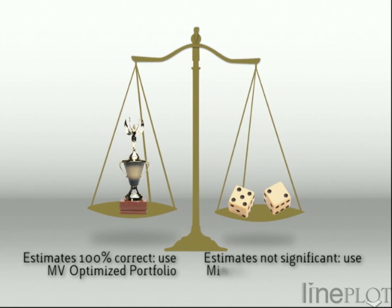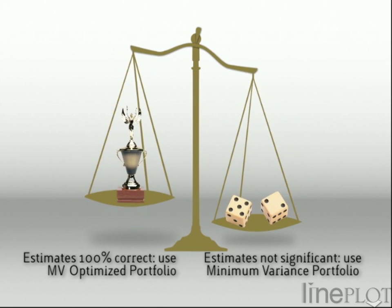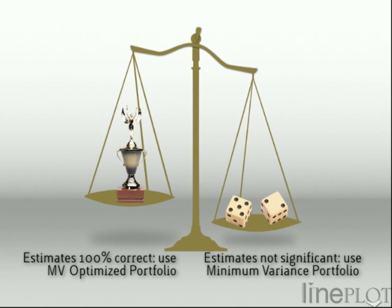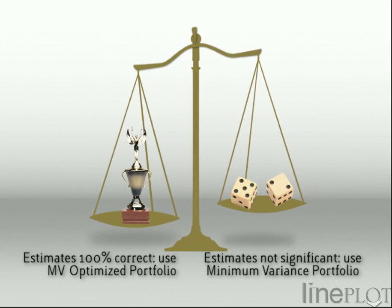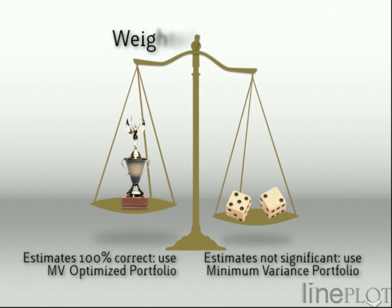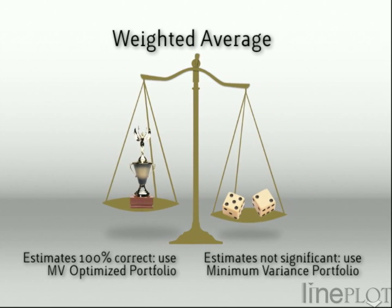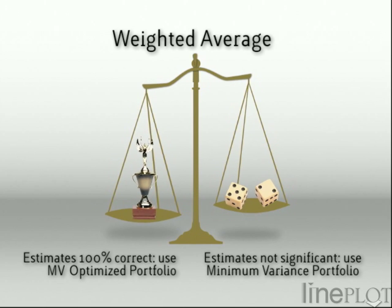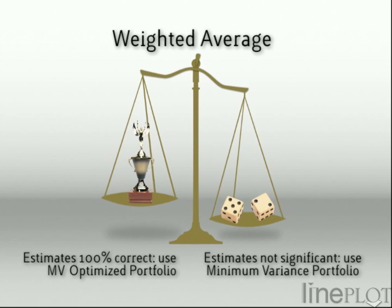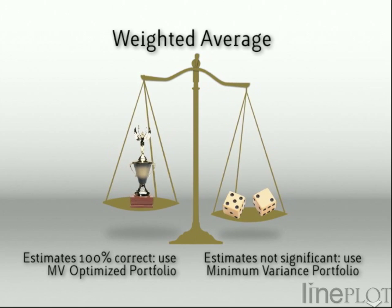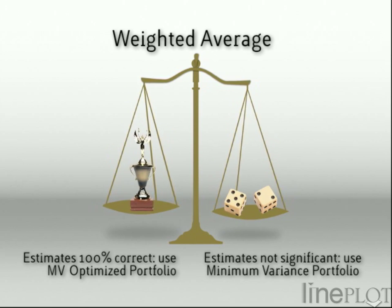But if we believed that our estimates had no predictive power, then the most rational investment would be the minimum variance portfolio, at the bottom of the efficient frontier. The truth is somewhere between these extremes. The Bayesian adjustment is a weighted average between these two weighting schemes. Based on the statistical properties of the data, the ART optimiser calculates the appropriate balance, compensating for the uncertainty in our estimated returns and the possibility that assets will behave differently in the future.